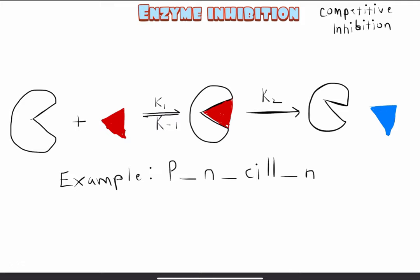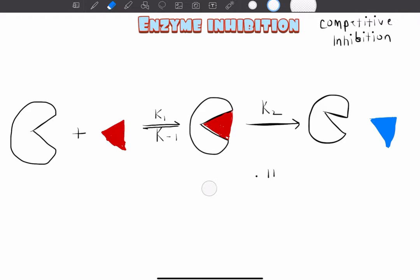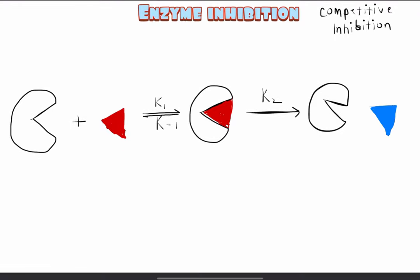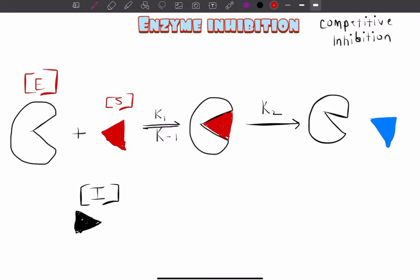Now I want to go into competitive inhibition, which is actually seen in a lot of reactions. In competitive inhibition, we have something called an inhibitor. I'll draw it in a different color. The red triangle represents our substrate. So we have the enzyme, we have the apples which are the substrate, and I'll draw it all out again.